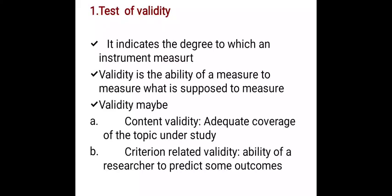The next type is criterion-related validity, which is the ability of a researcher to predict some outcomes. It means the measurement gives an opportunity to receive expected results. For example, if you study the satisfaction level, you will be able to measure it as: Highly Satisfied, Satisfied, Neutral, Dissatisfied, Highly Dissatisfied. You will be able to predict the outcome.